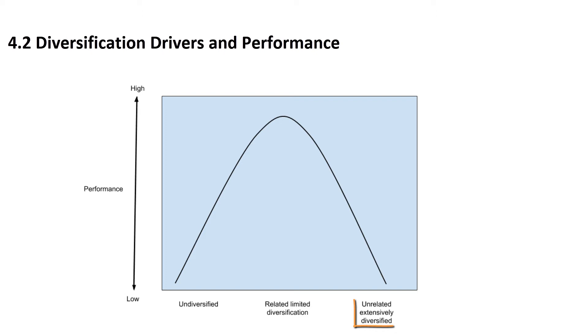Finally, if we perform unrelated extensive diversification, our performance is going to be low again. This is because it will be a domain very different to our current domain. For instance, from making cars, we would move to a business of refrigerators. We will have hardly any ideas how to produce those, and that is why our performance is going to suffer.